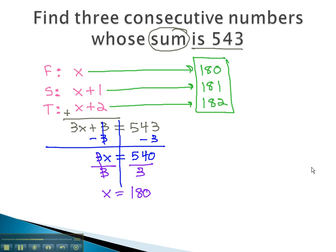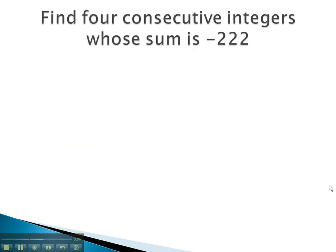Let's try another example. Here, the four consecutive integers whose sum is negative 222. Notice this time, we have four integers.